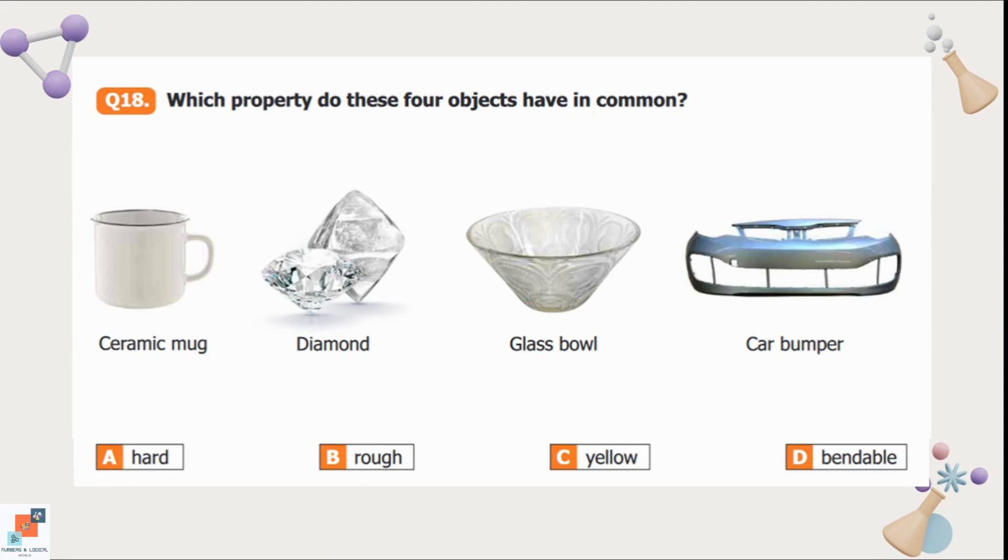Question number 18: Which property do these four objects have in common? Ceramic mug, diamond, glass bowl or car bumper. Option A is hard. Hard is a material which cannot be crushed, cut or distorted easily. Option B is rough, a material which has bumps on it, which is not smooth to touch. Option C is yellow. And option D is bendable, a material that can be folded easily. If we look at all these four objects, they are hard materials. So option A is the correct option.